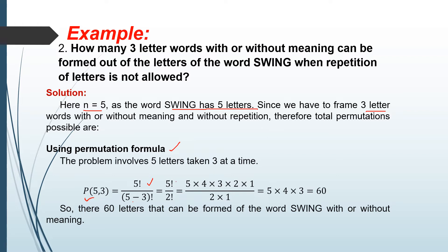So 5 factorial over (5 minus 3), which equals 2 factorial. Simplifying 5 factorial over 2 factorial: we have 5 times 4 times 3 times 2 times 1 over 2 times 1, which equals 60. So there are 60 three-letter words that can be formed from the word SWING with or without meaning.